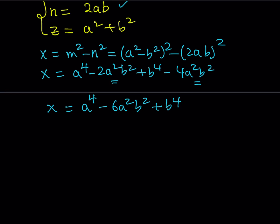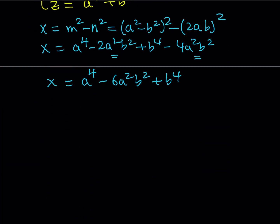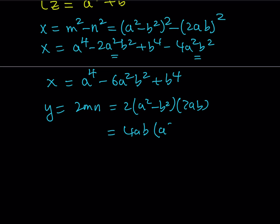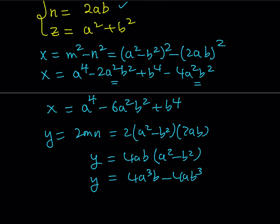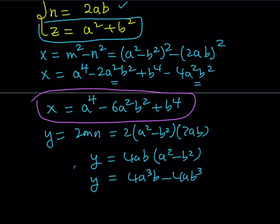Now for y: y equals 2mn. Substituting m equals a squared minus b squared and n equals 2ab gives 4ab times (a² − b²). Distributing: y equals 4a cubed b minus 4ab cubed. And z is already known: z equals a squared plus b squared. So we have all three values in terms of parameters a and b.